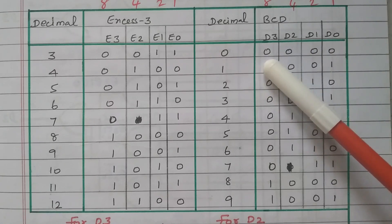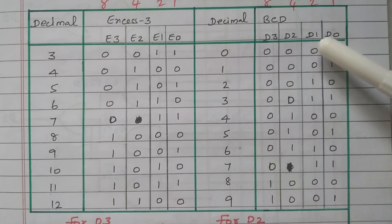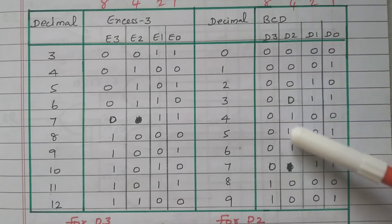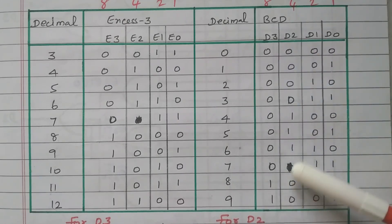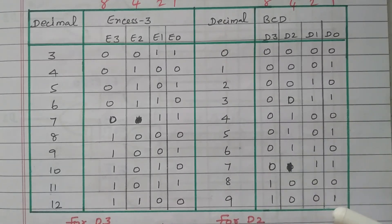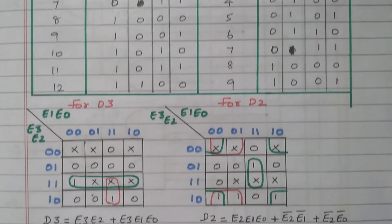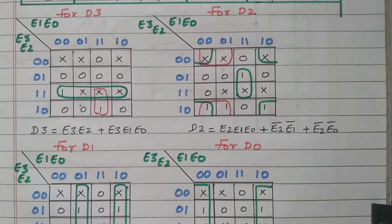From the minimized expression, we can implement with logic gates. Looking at the truth table: D0 has 5 ones, D1 has 4 ones, D2 has 3 ones, and D3 has 2 ones — so the number of ones keeps increasing from D3 to D0. These values need to be plotted in the K-map.